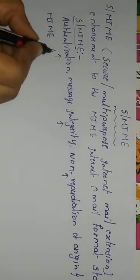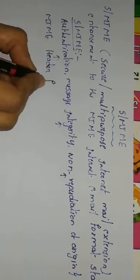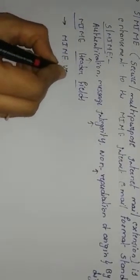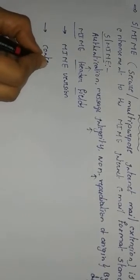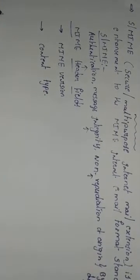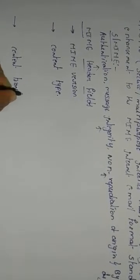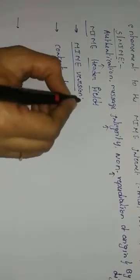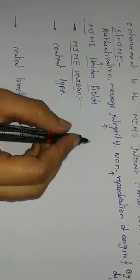In MIME, we have different types of header fields. The first field is MIME version, the next is content type, followed by content transfer encoding, then content ID and content description.